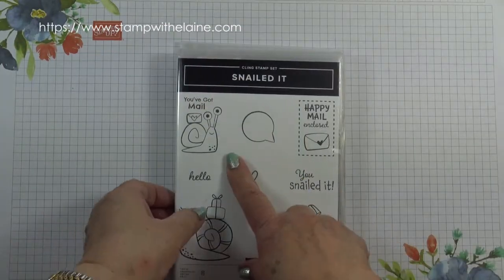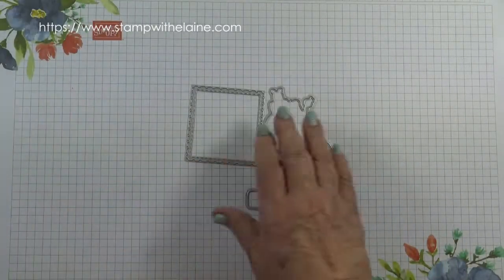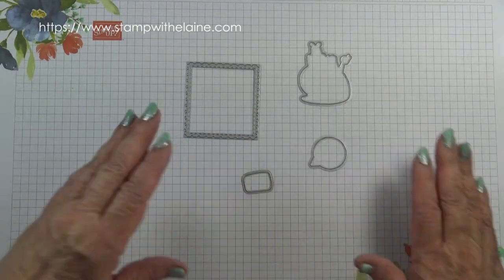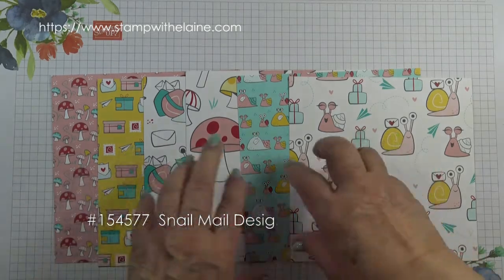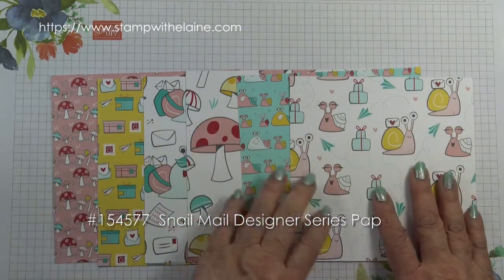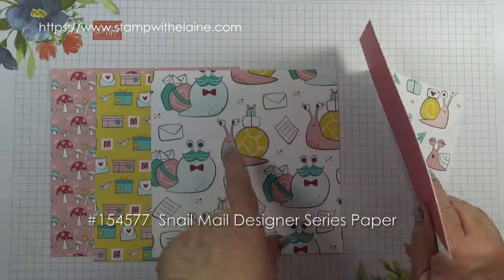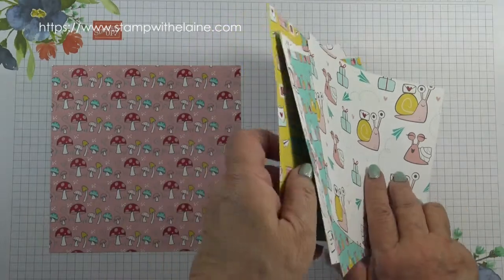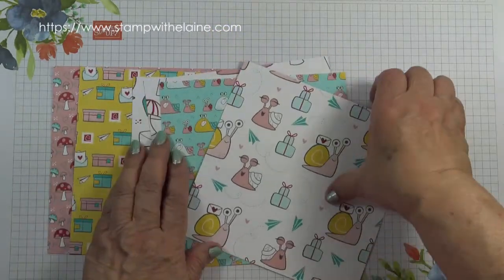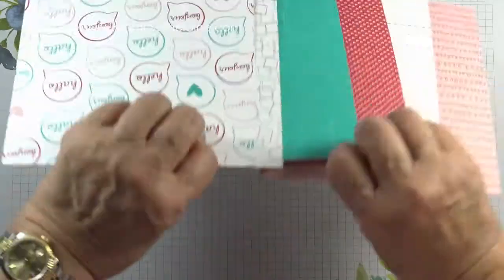So this is the stamp set, snailed it, bundled with the dies and these are the dies we're going to be using today. These are the papers we're going to be using and it's a snail mail designer series paper. You have dies that will actually cut out the images from the patterned paper and I'll show you which dies these are in a minute and that's the reverse of the papers.